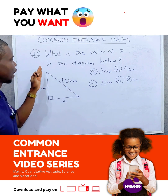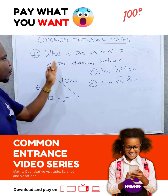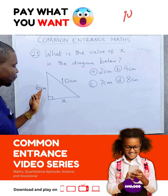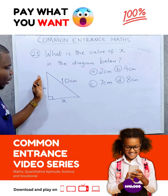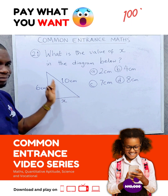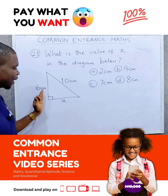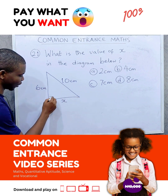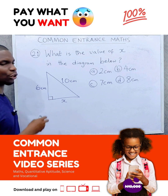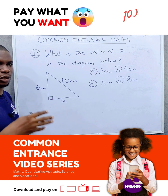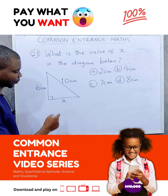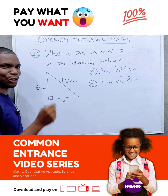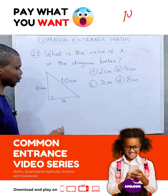Now let's solve the question. What is the value of X in the diagram below? What kind of triangle is this? This is a right angle triangle because of this 90 degrees. And when you know two sides of a right angle triangle, how do you get the third side? You use Pythagoras theorem.